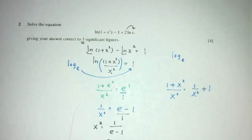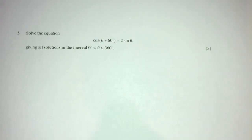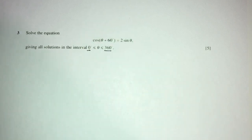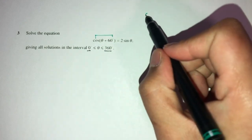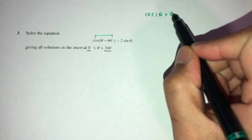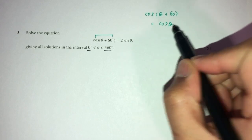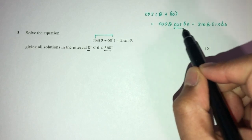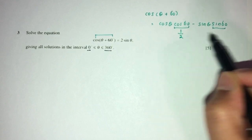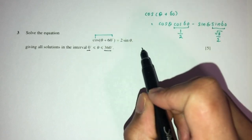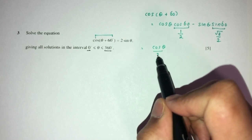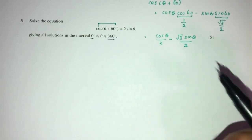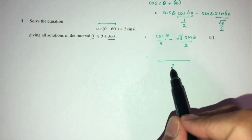Question number three: solve the equation, finding values of θ between 0 and 360 degrees. First, expand cos(θ plus 60) using the compound angle formula: cos θ cos 60 minus sin θ sin 60, which equals cos θ over 2 minus (root 3 sin θ) over 2.